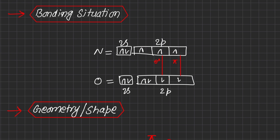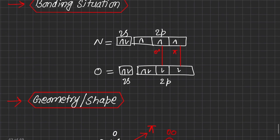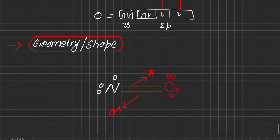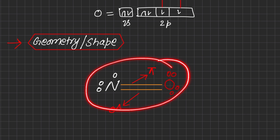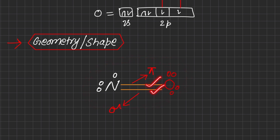Nitrogen contains one lone pair and one single electron, which may be considered a free radical, while oxygen contains two lone pairs. The overall geometry or shape of this molecule shows nitrogen with one lone pair and one single electron (free radical), oxygen with two lone pairs, and two bonds between nitrogen and oxygen — one sigma and one pi.